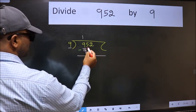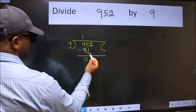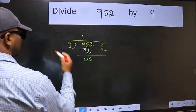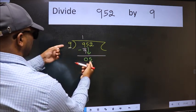After this, bring down the number 5. Now here we have 5 and here 9. 5 is smaller than 9.